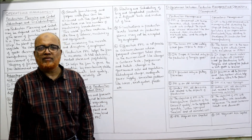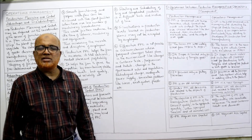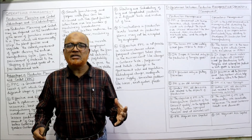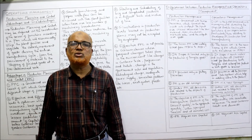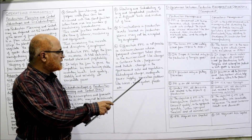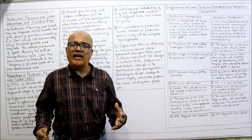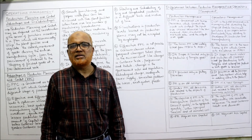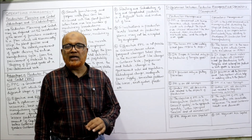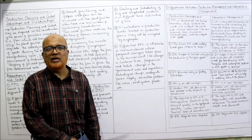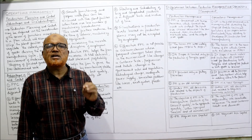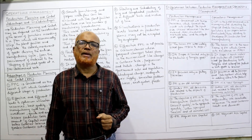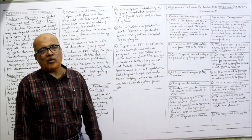Changes in customer tastes and preferences, changes in government rules and regulations, and technological changes are all important external influences that affect production planning and control. Inadequate power supply and uncertain problems like wars, earthquakes, and floods — these natural calamities — also cause the PPC results to not be as expected. However, the disadvantages are very few compared to the advantages, which is why it is better to apply production planning and control in every business.